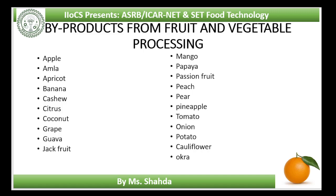Okra is a warm season vegetable crop cultivated throughout India for its immature fruits, which are generally cooked as vegetable. Okra soup and stew are popular dishes. Black or brown seeds of ripened okra are roasted and used as a substitute for coffee. The stem of the plant is used for the extraction of fiber in the paper industry.